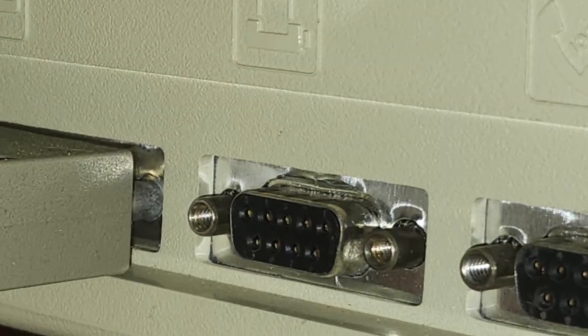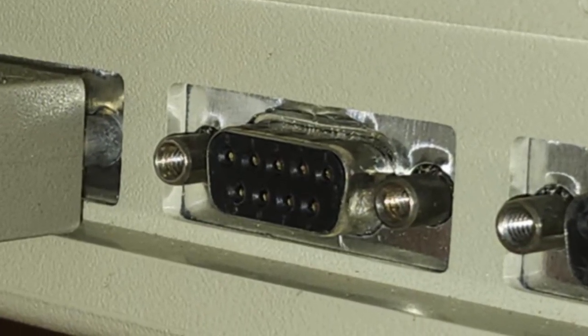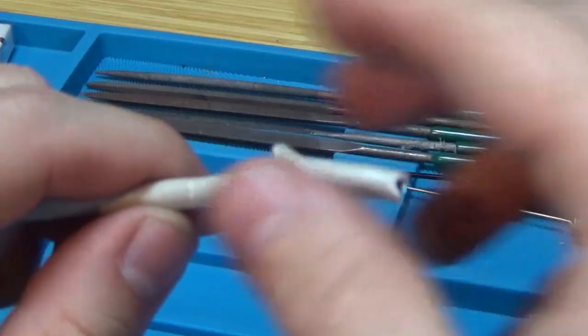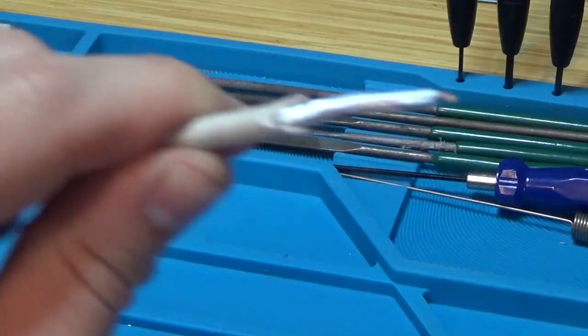Since the port on the Macintosh is female, I would be using the male end of the serial cable. Next, I stripped the insulator off the cord and off the individual wires.